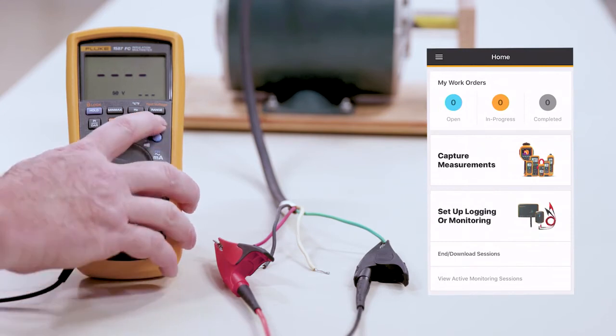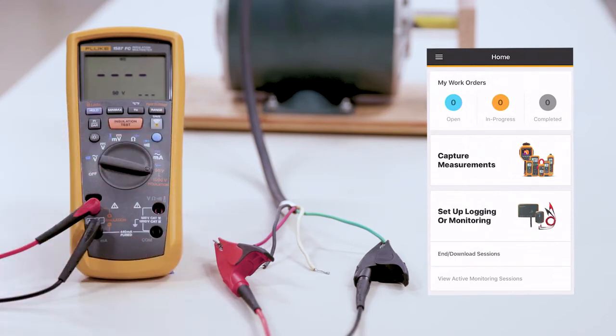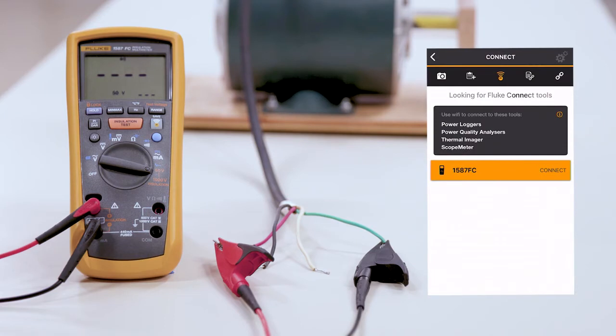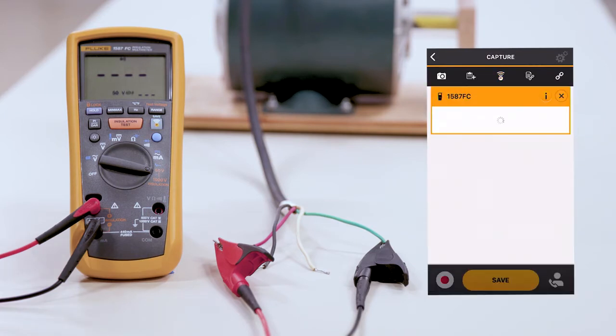In the corner here, we'll hit the Fluke Connect button. We're going to go over to our phone and hit the Capture Measurements. As you can see, the 1587 FC is now connected to it. We'll connect to that meter.